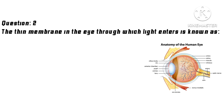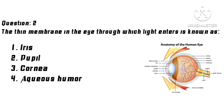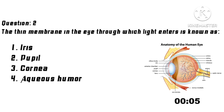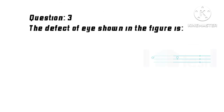Question 2: The thin membrane in the eye through which light enters is known as? Options: 1. Iris, 2. Pupil, 3. Cornea, 4. Aqueous humor. Correct answer: 3. Cornea.